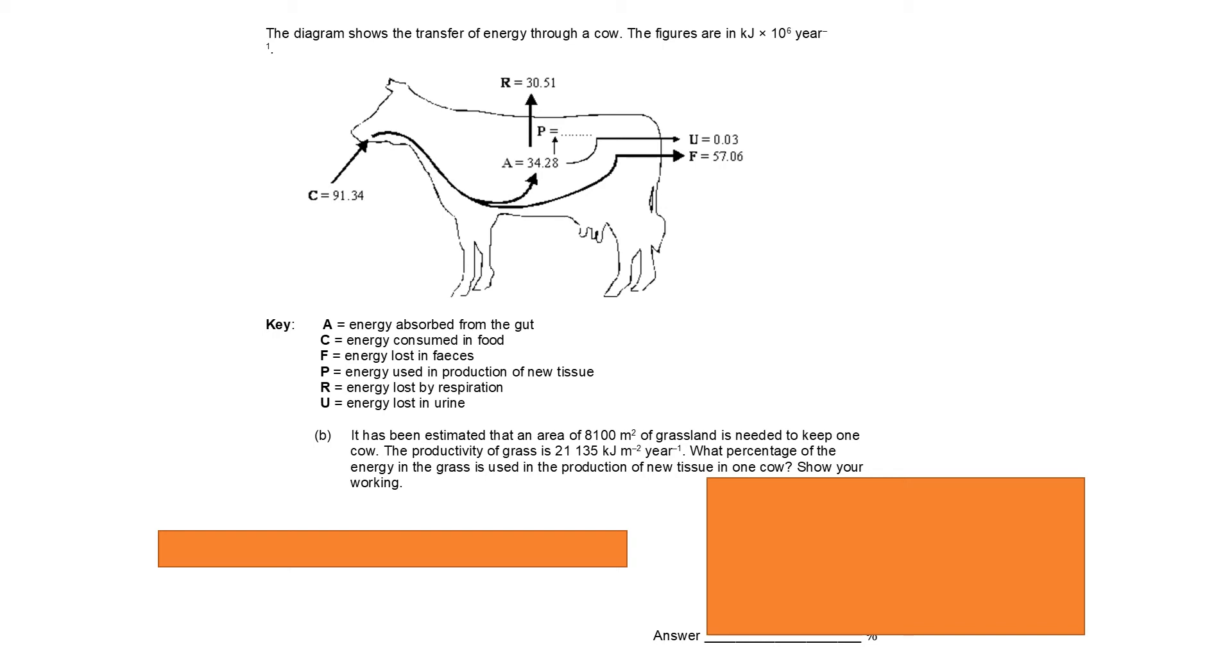Because what we're working out here is what percentage of the energy in the grass is used in the production of new tissue in one cow. So we need effectively P on the top of our fraction divided by these two numbers multiplied together. So what's important here is if we have a think about our value for P, it's the number that we got in the previous question. Even if we got that wrong, but you show your working here and you use the number that you actually calculated, you can still get marks here. It's something called error carried forward. And they will still allow that. The other thing is it says show your working. And very often in these calculations, it says show your working. And that's because you can get marks even if you get the wrong answer, but you've shown that you knew how to carry out the calculation.